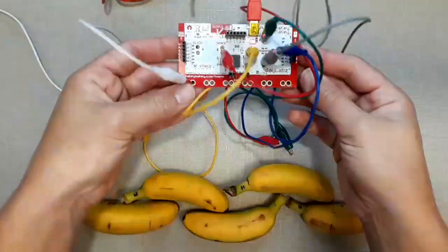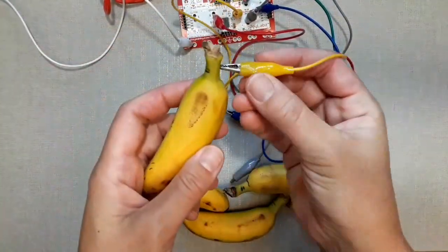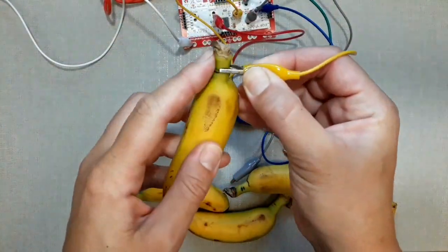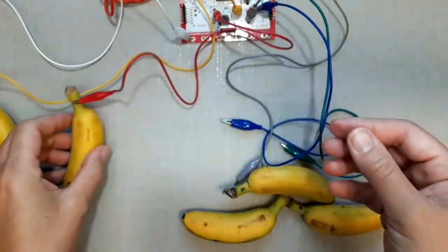Get it? Bites? Then connect the bananas to the other end of the alligator clips, ensuring a firm bite as well. This way you've established a good connection for electric conductivity.